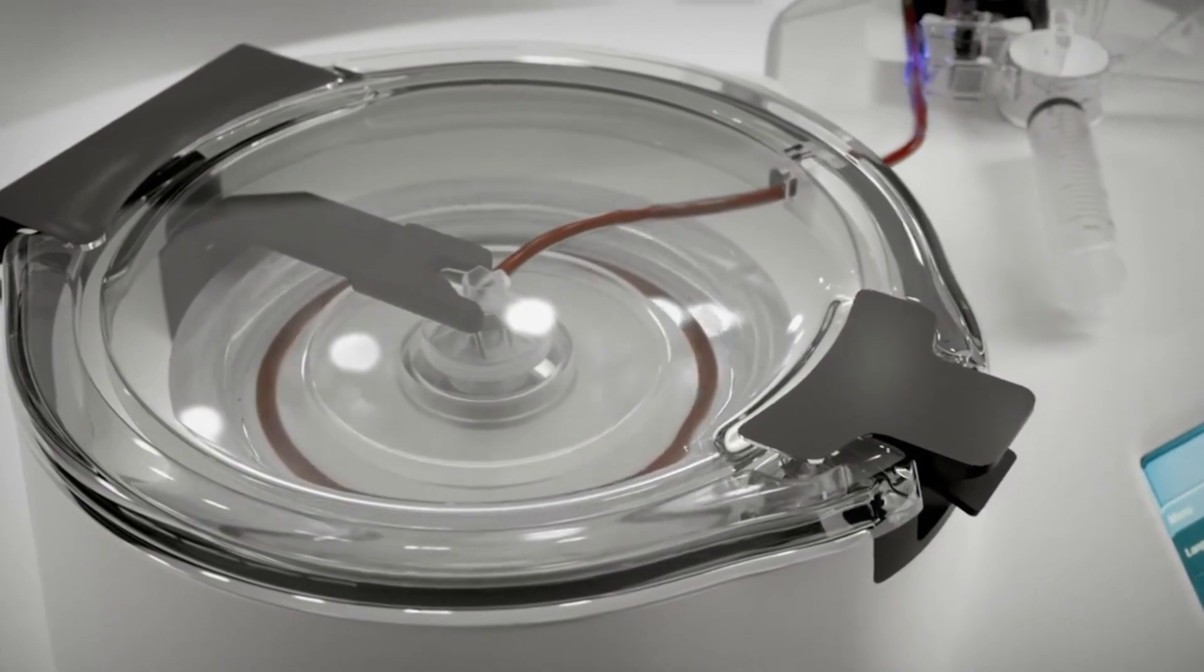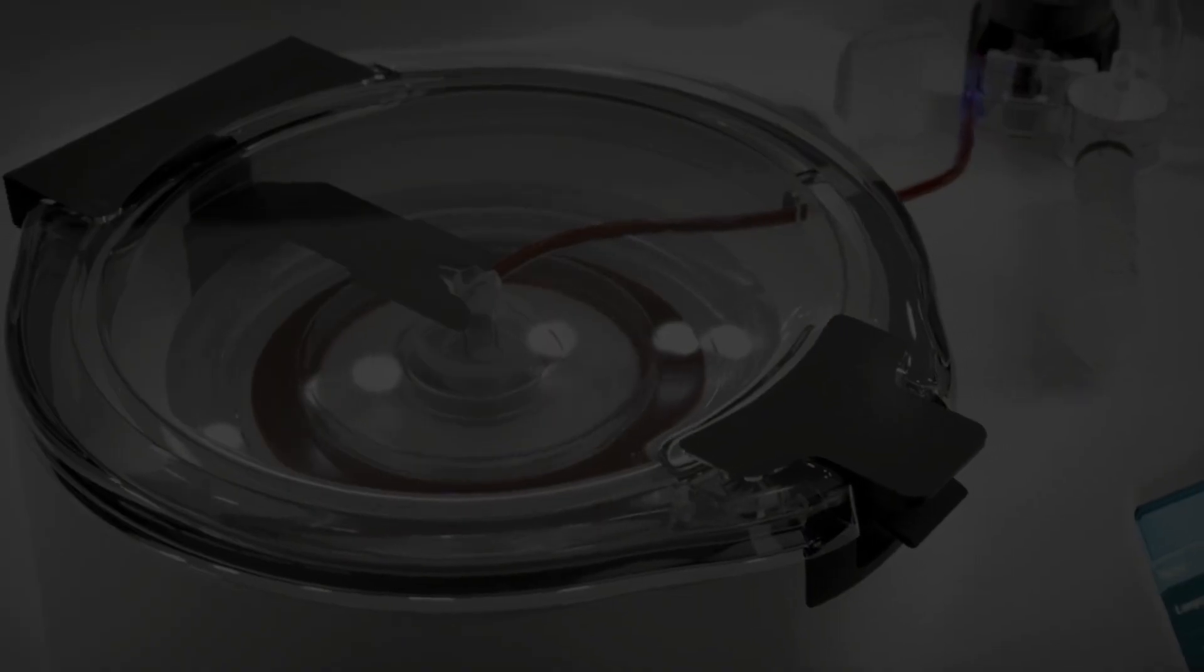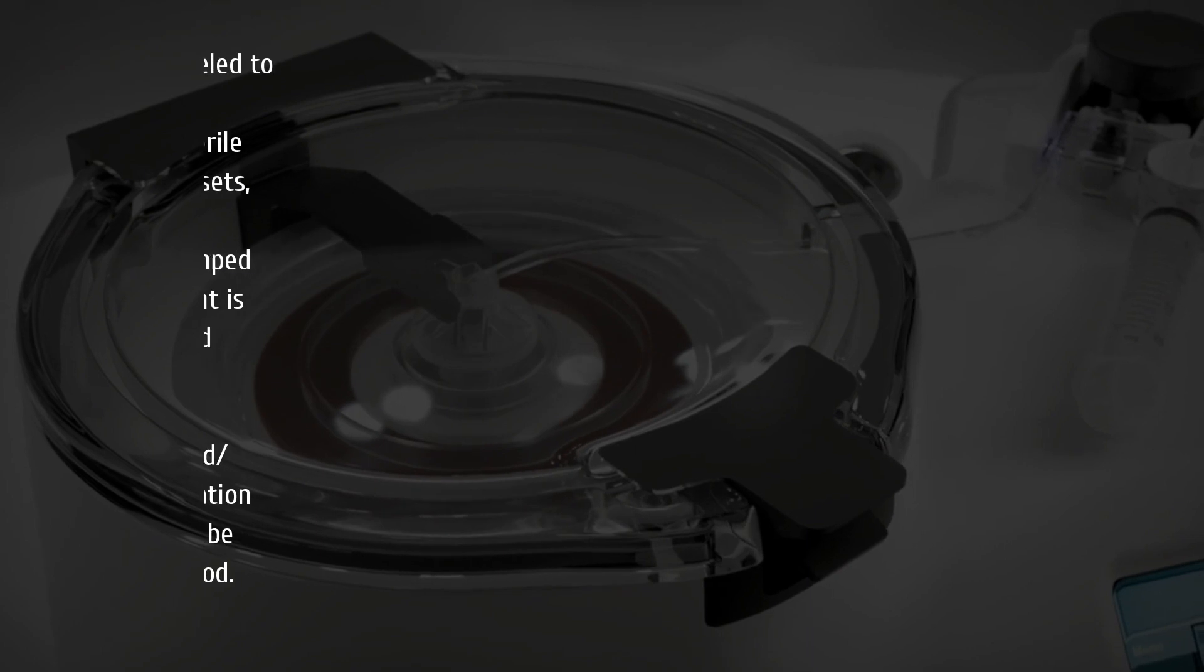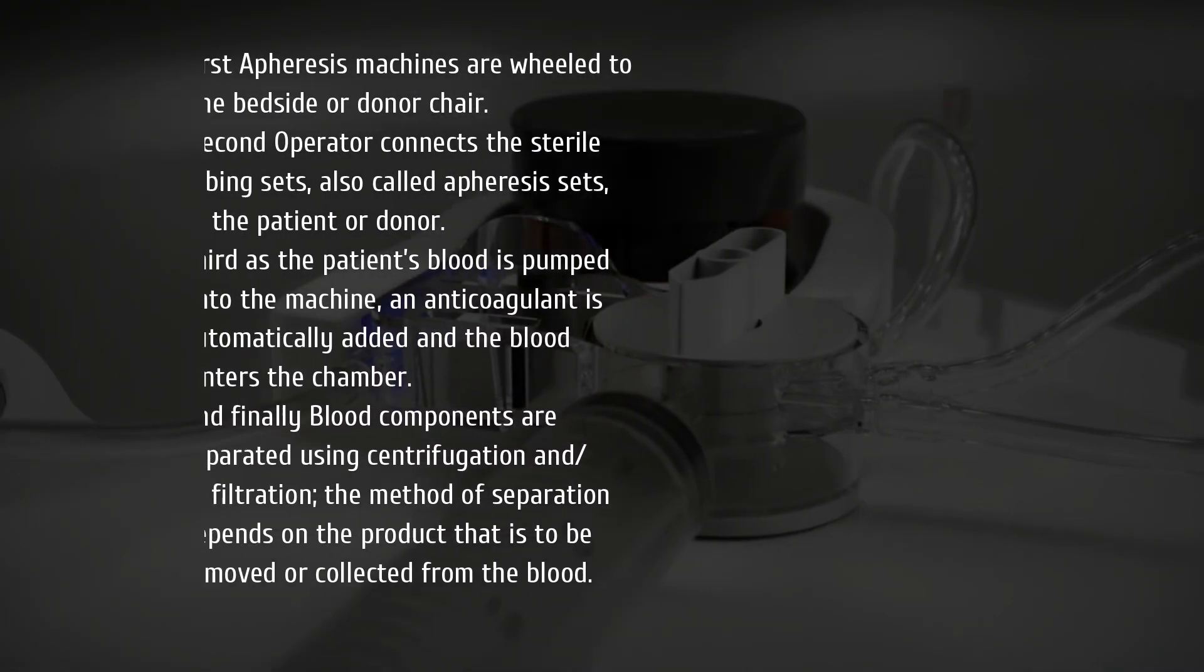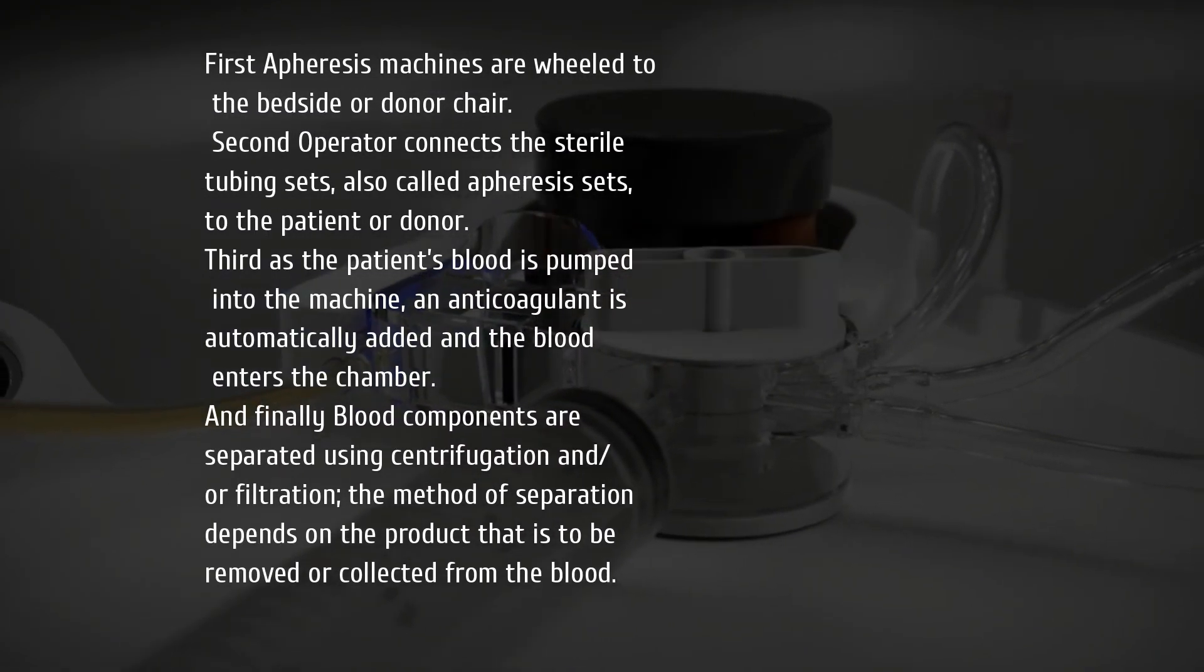Let's end this video with the operating steps of an apheresis machine. First, the apheresis machine is wheeled to the bedside or donor chair. Second, the operator connects the sterile tubing sets, also called apheresis sets, to the patient or donor.